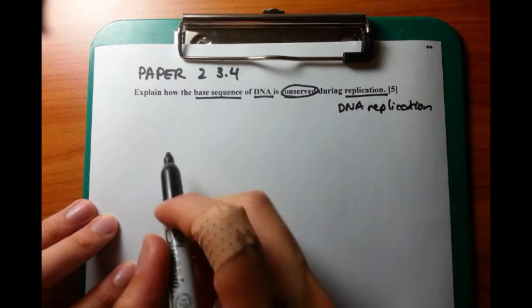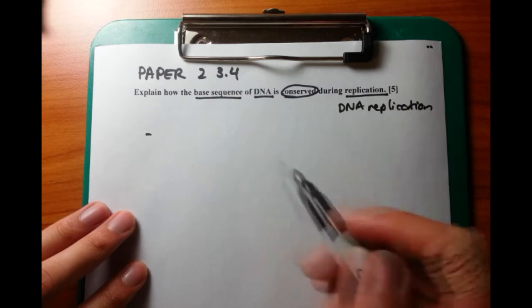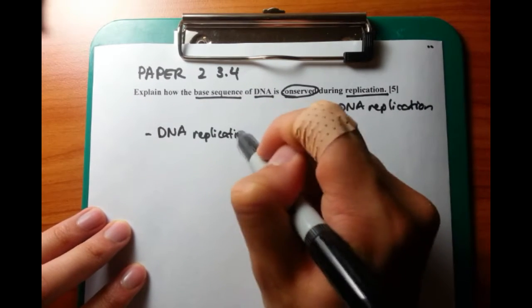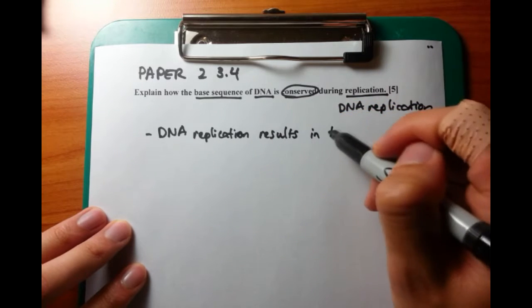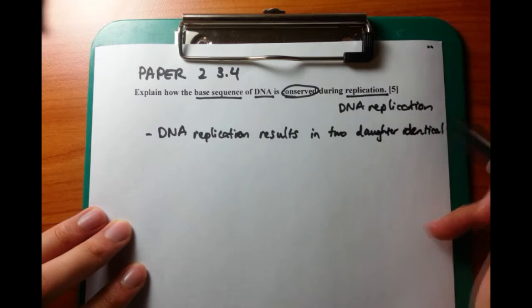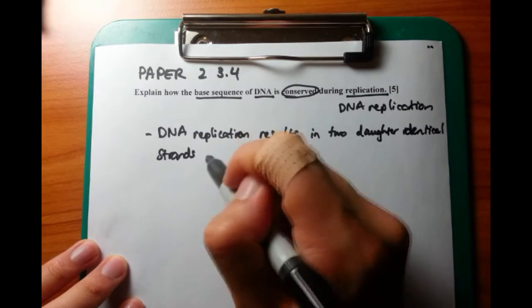We want to talk about what DNA replication is, first of all. So DNA replication occurs during interphase, and this results in two identical strands of DNA, which allows mitosis to occur later on.